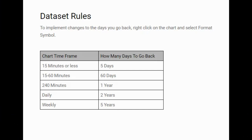Finally, I want to go through the data set rules. This is hugely important because if you get these wrong or go back too far, you're not going to get correct information — or it's going to slow the system down dramatically because of the many algorithms being run. If you're doing a 15-minute timeframe or less, don't go back any further than five days. 50 to 60 minutes: 60 days. 240 minutes: one year. Daily: two years. Weekly: you can go back as far as five years. Stick to this and you won't go wrong — a lot of problems people come to me with trace back to the data set rules.